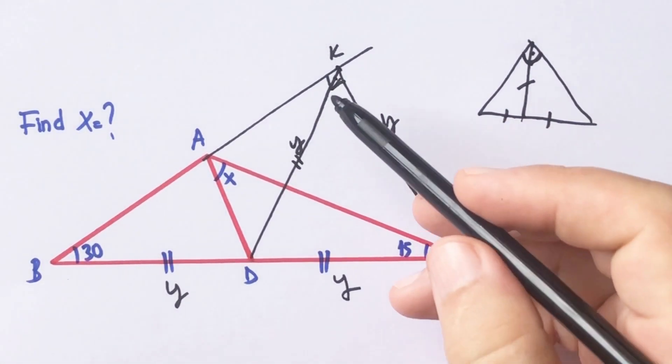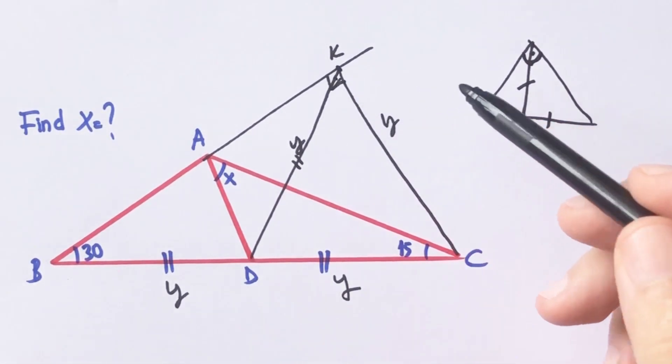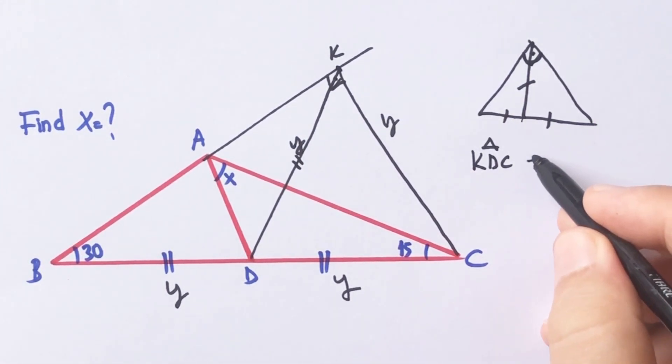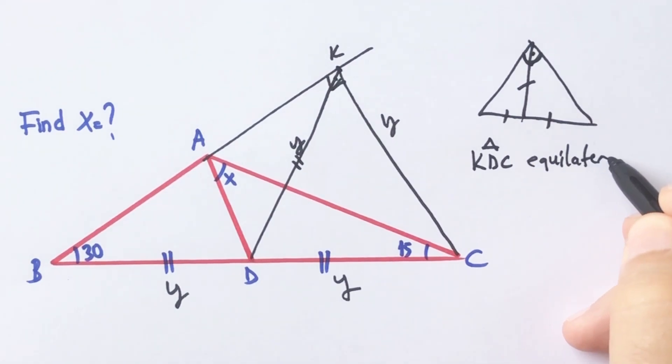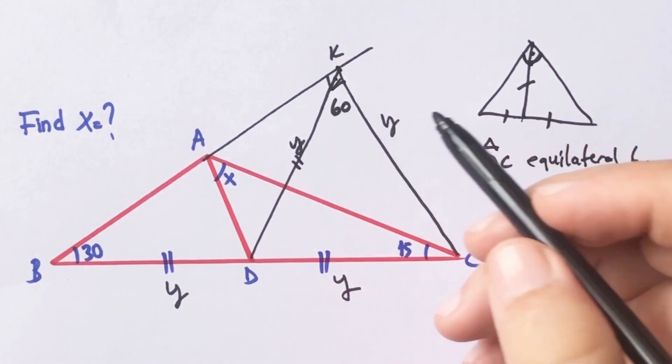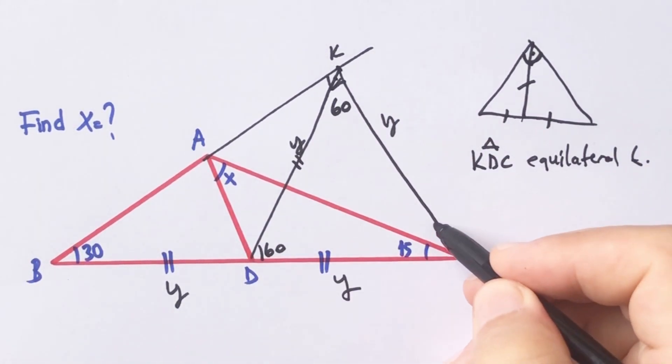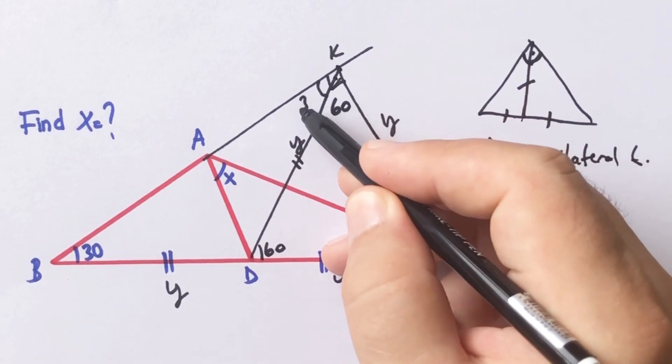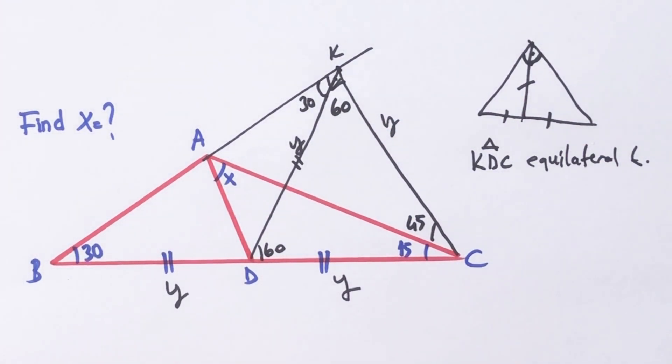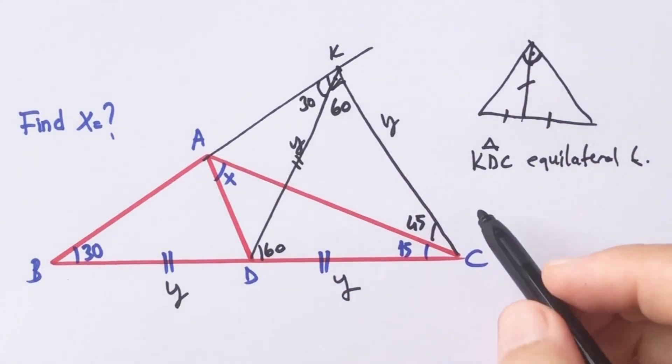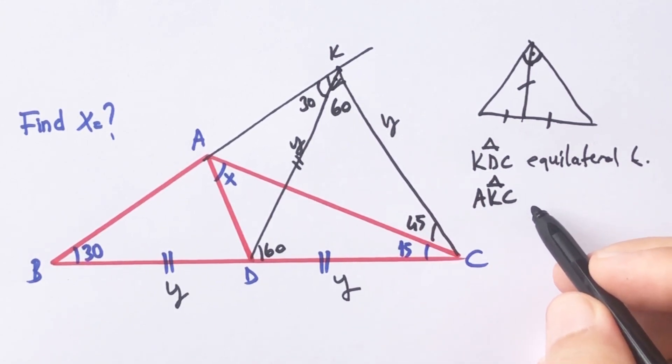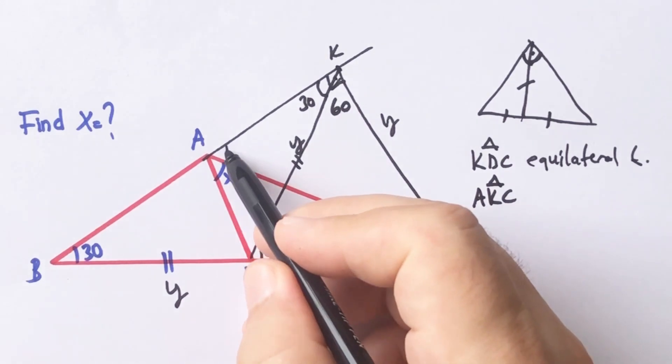Okay, if you notice that kdc triangle is an equilateral triangle. So here is 60 degrees and this angle is also 60 degrees and 35 degrees left here, 30 degrees left here. And if you focus on the akc triangle, akc triangle is also an isosceles right triangle.